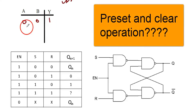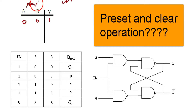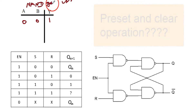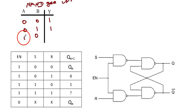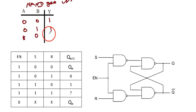Hello dear friends, today I will discuss with you the preset and the clear operation with respect to the flip-flop. This is a NAND gate: 0,0 gives 1; 0,1 gives 1; 1,0 gives 1; only 1,1 gives 0. That's the NAND gate.